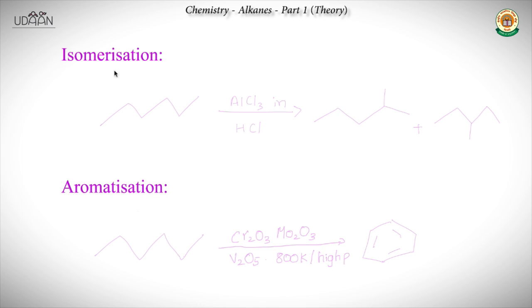In the isomerization reaction, we take an alkane and treat it with AlCl₃ in the presence of HCl to get isomers. For example, hexane treated with these reagents gives 2-methylpentane and 2,2-dimethylpentane. In aromatization, hexane treated with Cr₂O₃, molybdenum oxide, or vanadium pentoxide at very high pressure and temperature gives benzene. When you see Cr₂O₃, MoO₃, or V₂O₅ as catalysts, it's most likely an aromatization reaction.